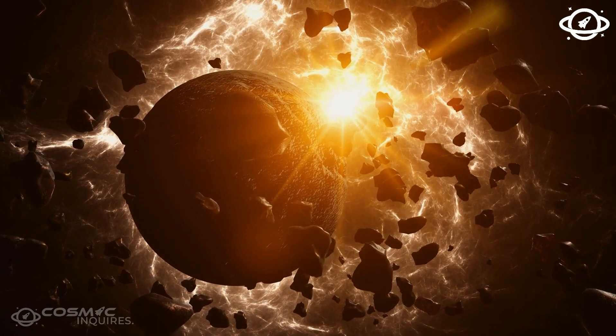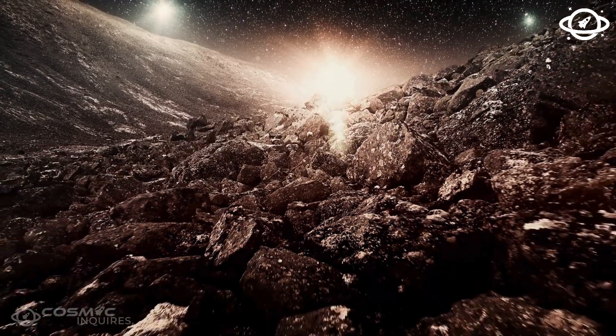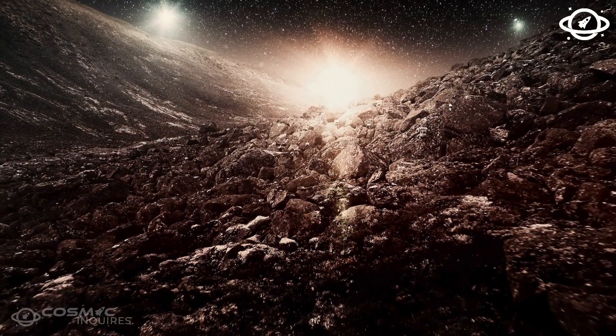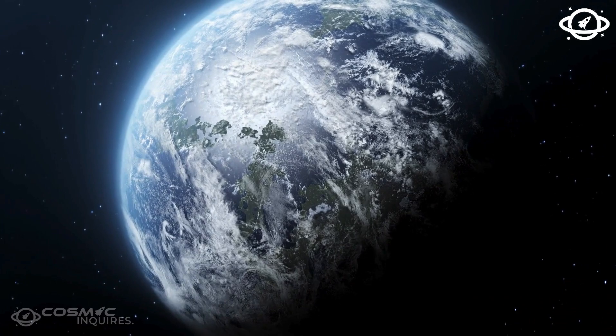With a diameter of around 940 kilometers, Ceres is the smallest recognized dwarf planet in our solar system but stands out as the largest object in the asteroid belt, boasting a roughly round shape due to its own gravity.